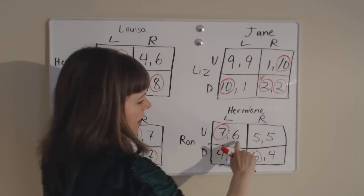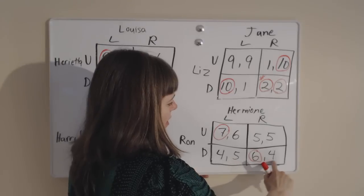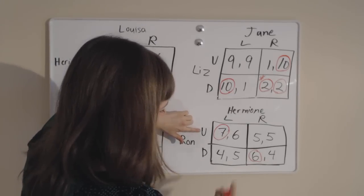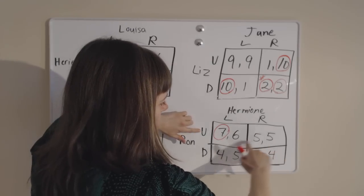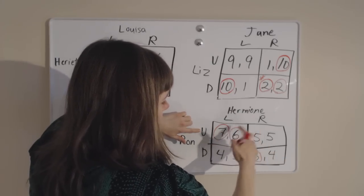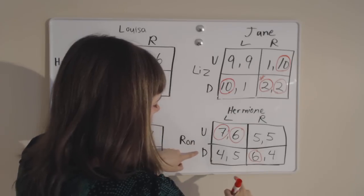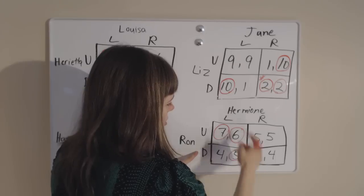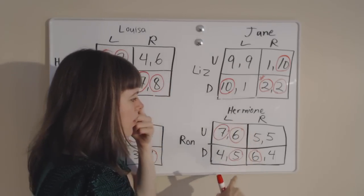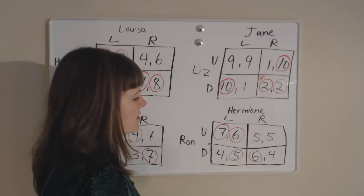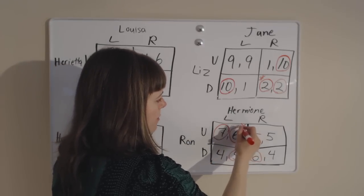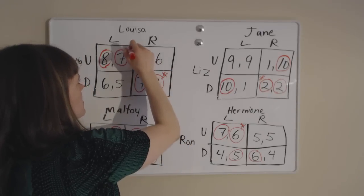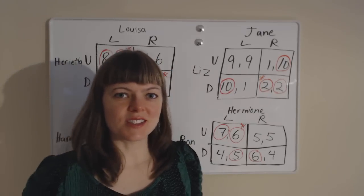We flip perspectives and think about Hermione's payoffs for each of Ron's strategies. If Ron goes up, Hermione would have wished she went left. If Ron goes down, Hermione's best response is also to go left. So Hermione has a dominant strategy of going left, and Ron's best response is to go up. We have 1 Nash equilibrium. And that is how you approach this kind of problem.